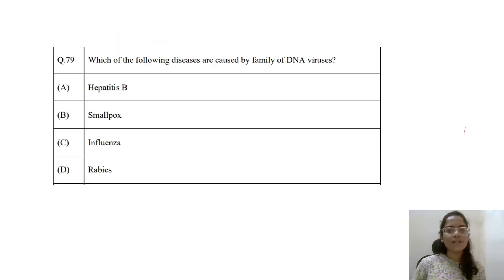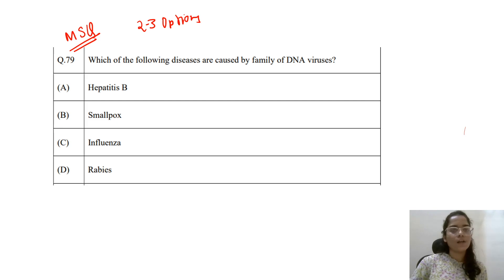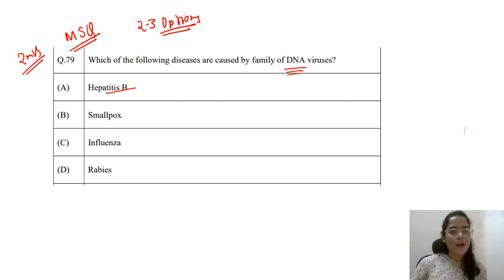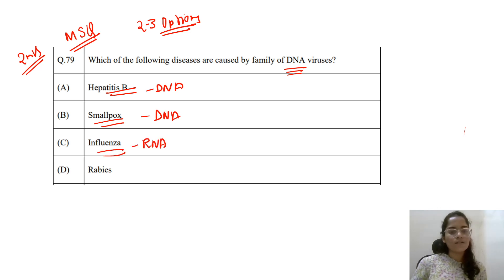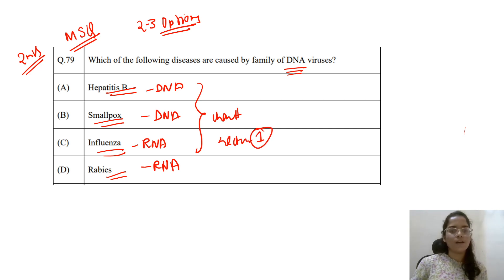The next question asks which of the following diseases are caused by a family of DNA viruses — this is an MSQ (multiple selection question) worth 2 marks. Hepatitis B is a DNA virus, smallpox is also a DNA virus, influenza is an RNA virus, and rabies is an RNA virus. These are all in the chart from lecture 1. The correct answers are options A and B.